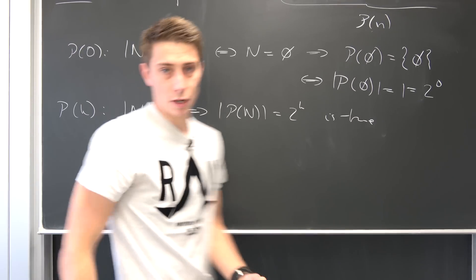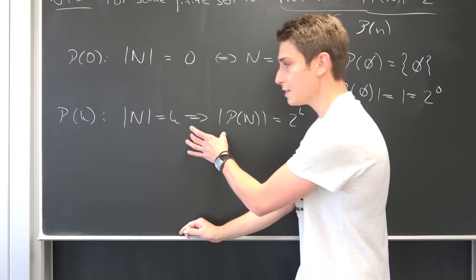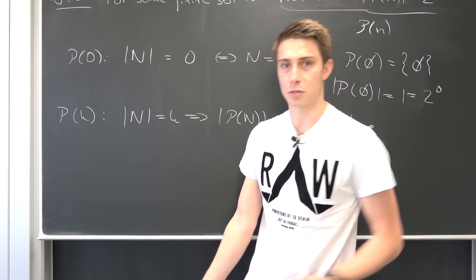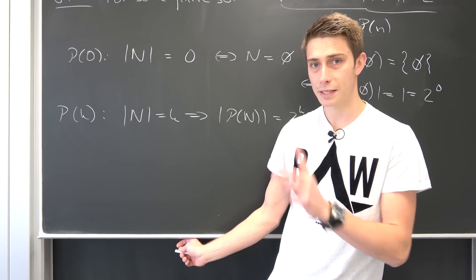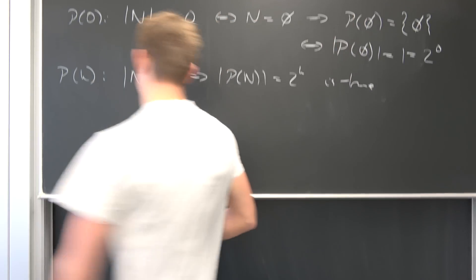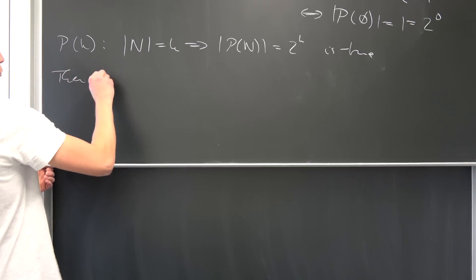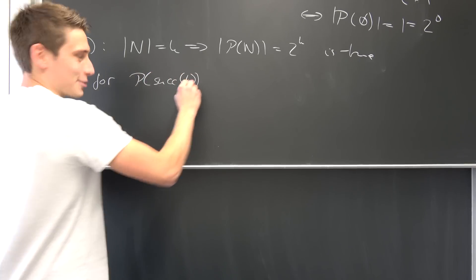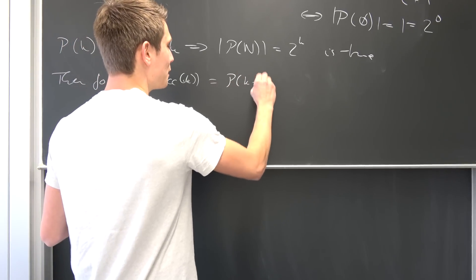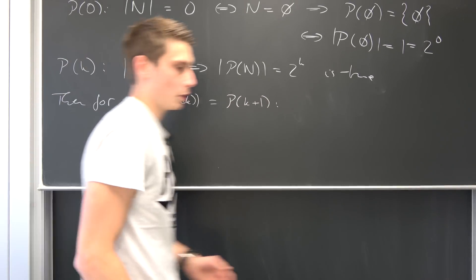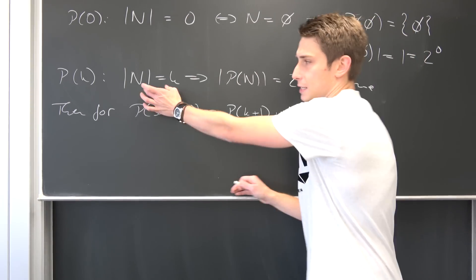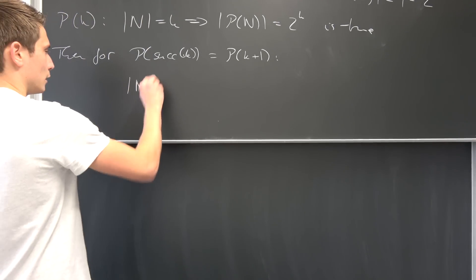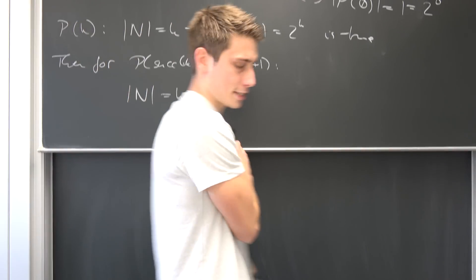We are just going to assume that this right here is true, and now we want to see if this ensures our proposition being true for the K plus one member. Okay, let's take a look at P of K plus one. Then for P of suck, that's the successor of K. This is just K plus one. So P of K plus one, what do we get? Well at the moment we just know the left hand side, namely that the cardinality of N is now K plus one. Okay, this is the first part.